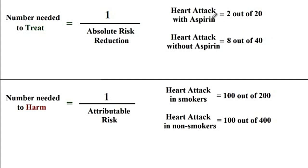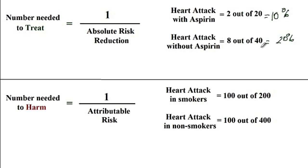Here's an example: patients treated with aspirin — 2 out of 20 develop heart attack, so the risk is 10%. For patients not treated with aspirin, the risk of heart attack is 8 out of 40, which is 20%.